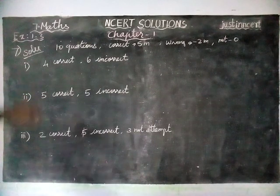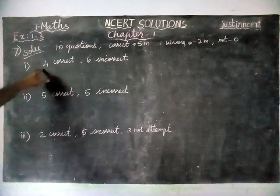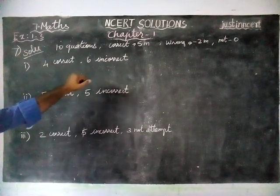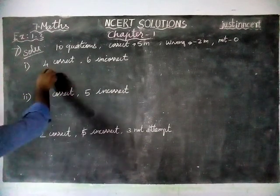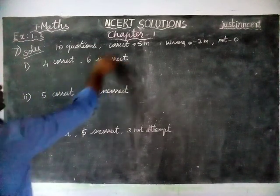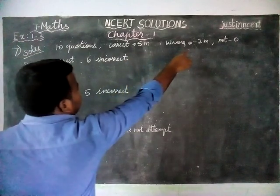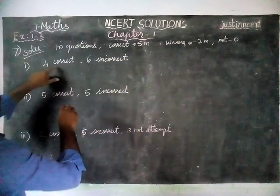First one is, Mohan gets 4 correct answers and 6 incorrect answers and what is his score? Now, 4 correct answers. Each correct answer will get 5 marks and wrong answer will get minus 2 marks. We are going to check it.